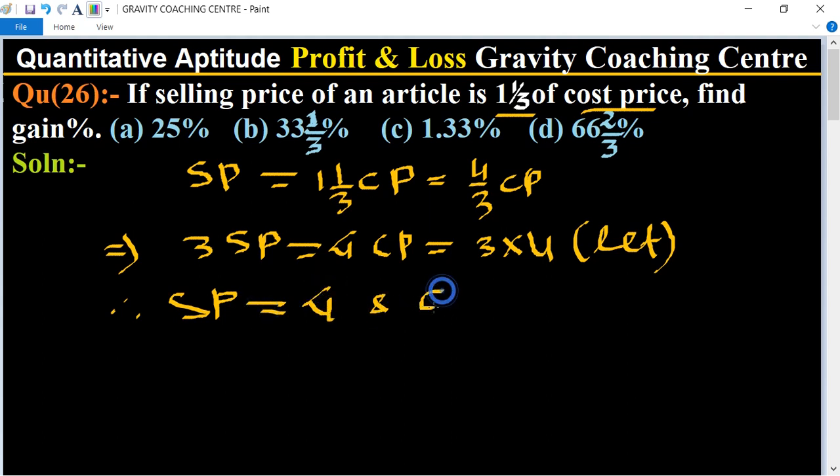Therefore SP equal to 4 and CP equal to 3. So in this case, SP is greater than CP, so profit equal to 4 minus 3 equal to 1.